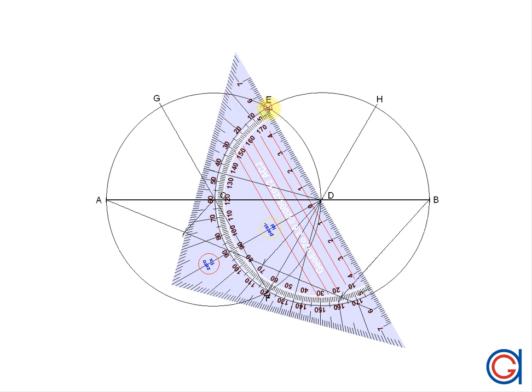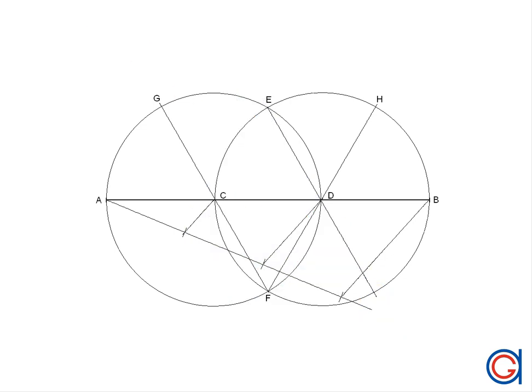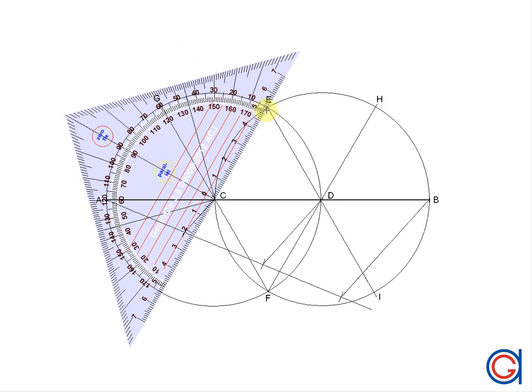And again we draw a line starting from point E through point D until it cuts our circle at a new point I. And finally we will draw a line from point E through point C until it cuts our circle at our final tangent point which we will call J.